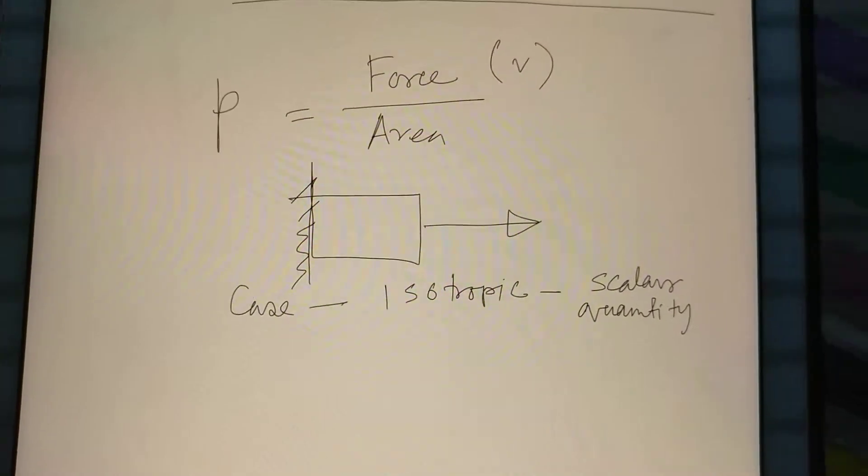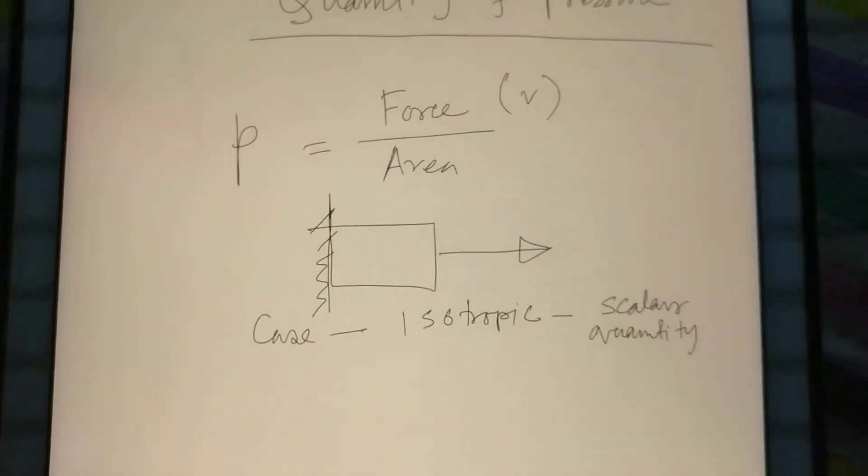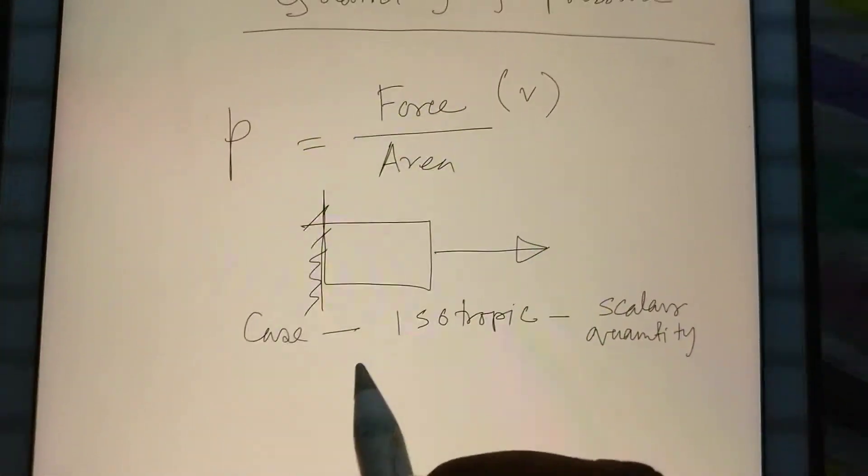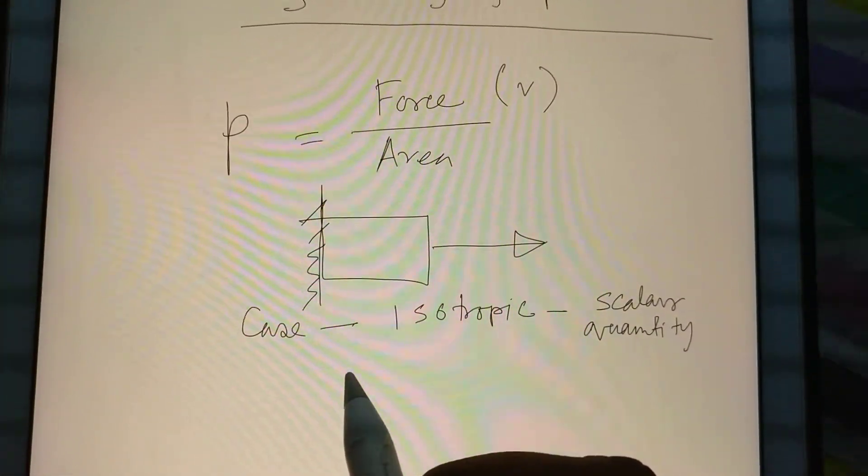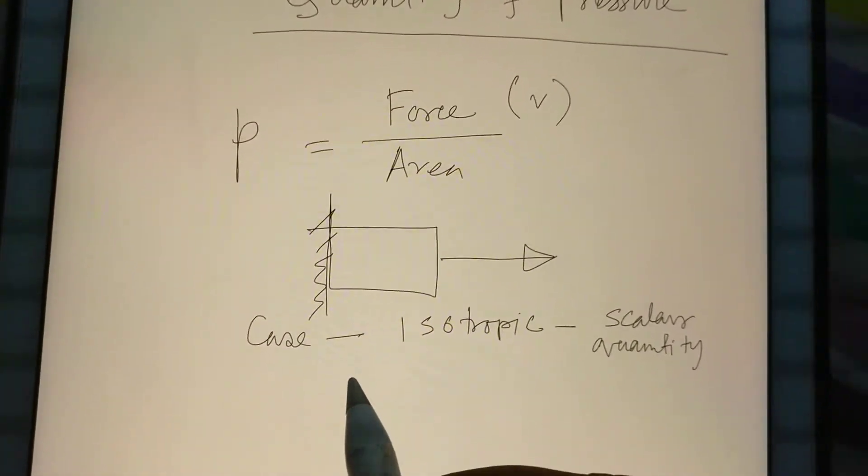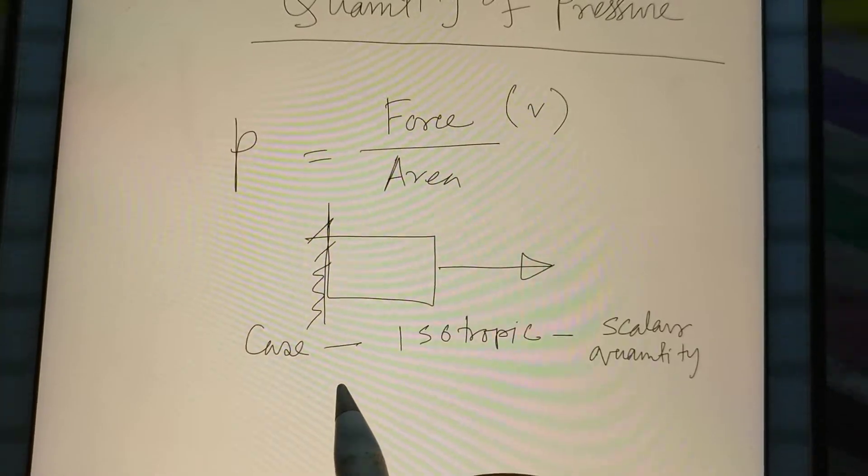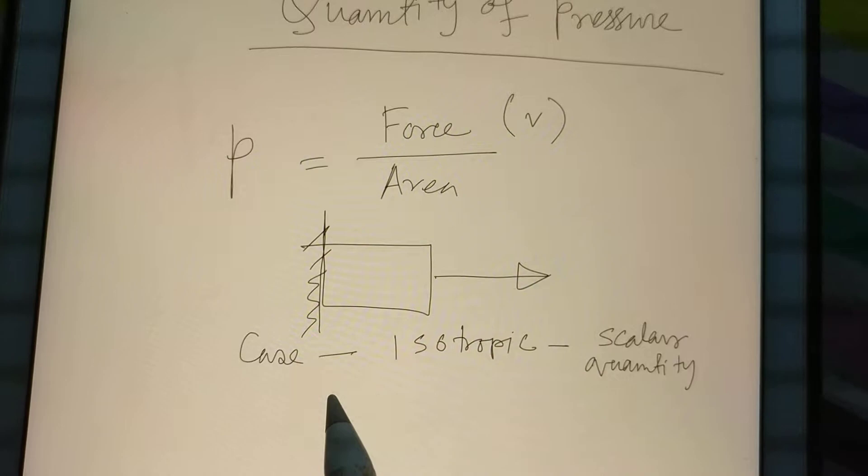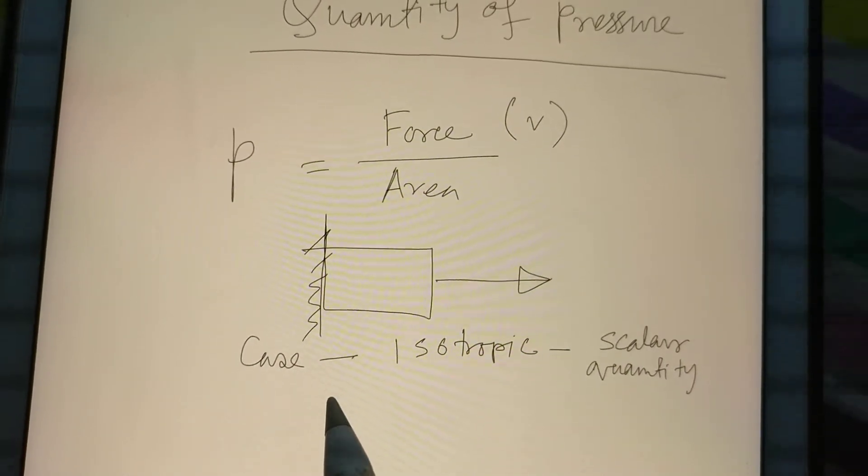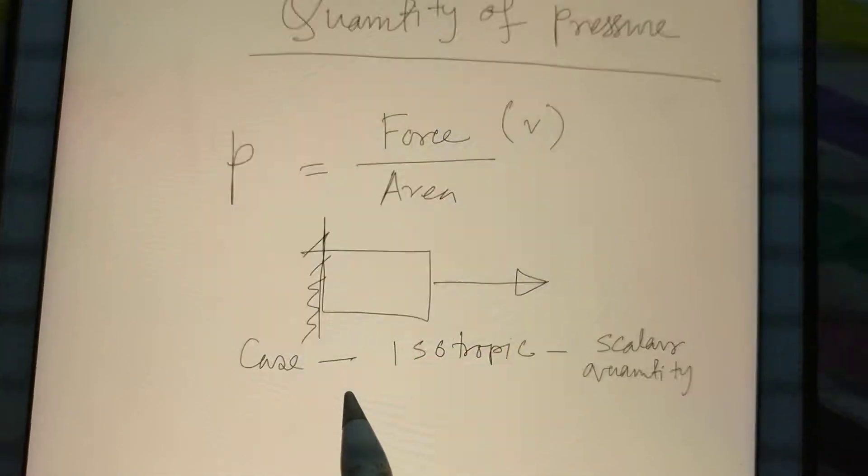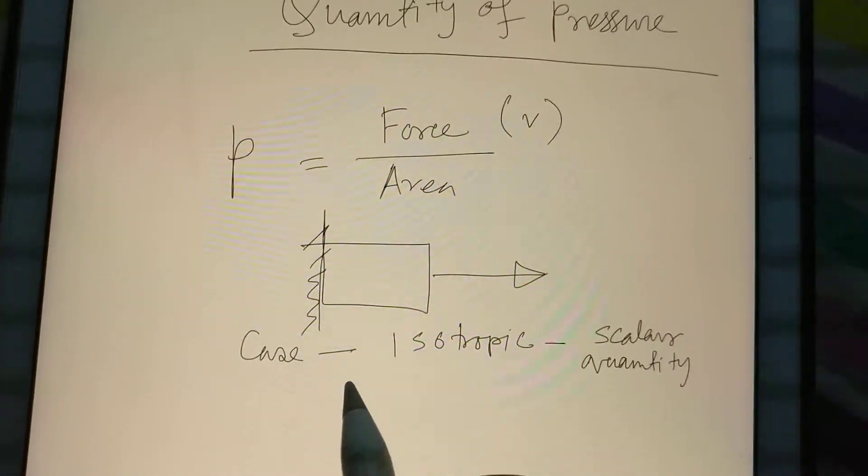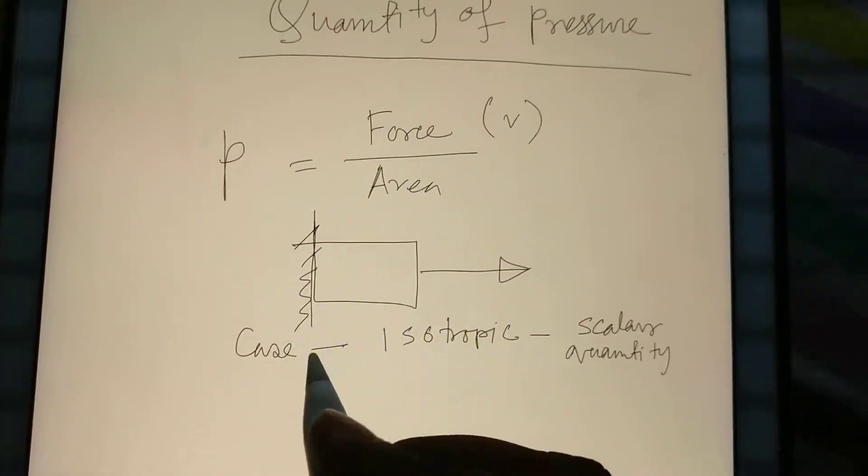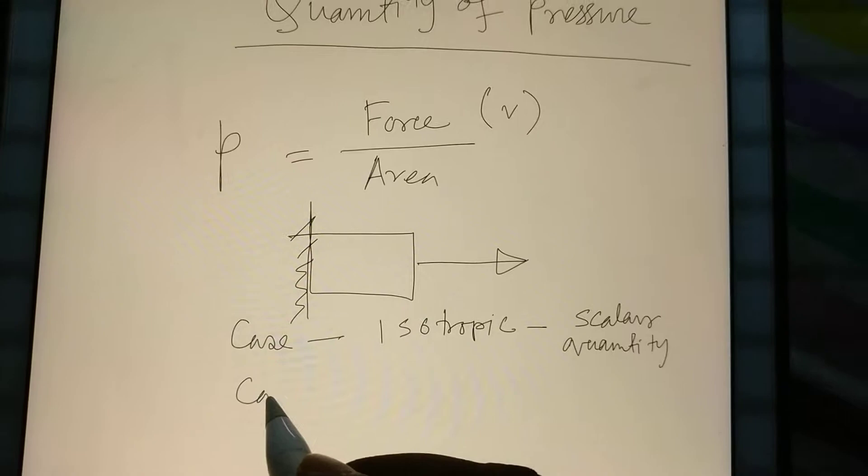Why is pressure a scalar quantity? Because in fluid medium, in gaseous medium, pressure acts on every point where the force finds any kind of area. So that pressure acts in every dimension, every kind of direction. So there is no particular direction. That is why we can say this is a scalar quantity.